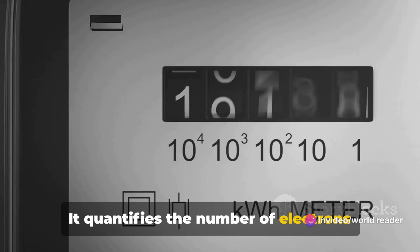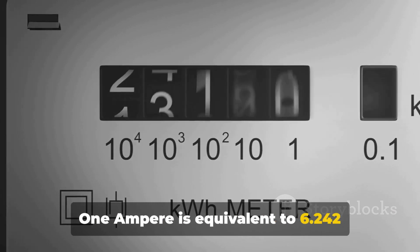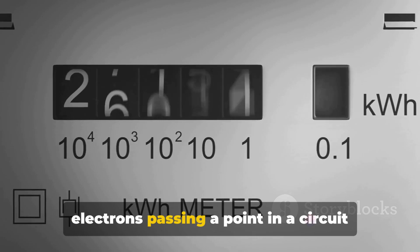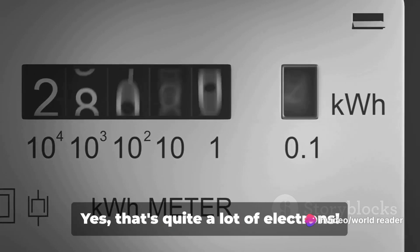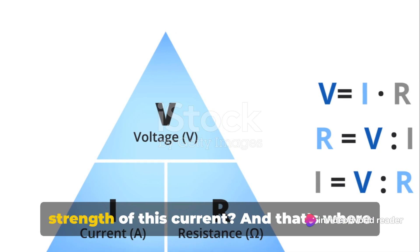It quantifies the number of electrons flowing in the circuit. One ampere is equivalent to 6.242 times 10 to the 18th power electrons passing a point in a circuit each second. Yes, that's quite a lot of electrons.